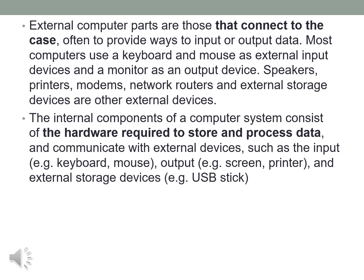The internal components of a computer system consist of the hardware required to store and process data, and communicate with external devices, such as the input (for example keyboard, mouse), output (for example screen, printer), and external storage devices (for example USB stick).